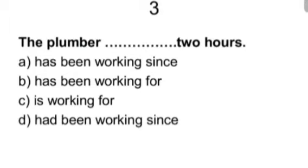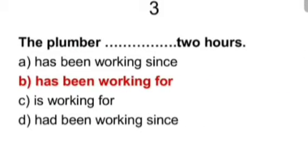Question number three. The plumber blank two hours. Has been working since, has been working for, is working for, had been working since. And the answer is, has been working for two hours. If a specific time is mentioned, just like 3 p.m., 2 p.m. or yesterday's one particular date is mentioned, then it would be since. And the work is still going on, that is why has been.